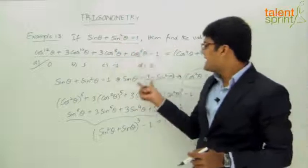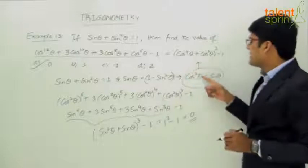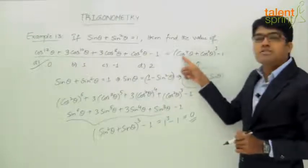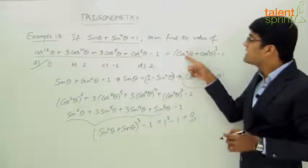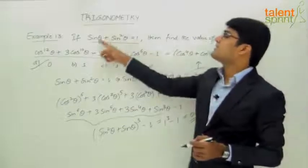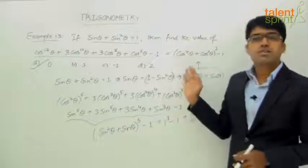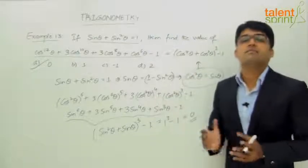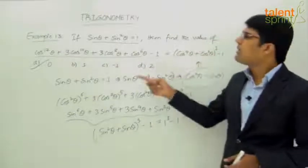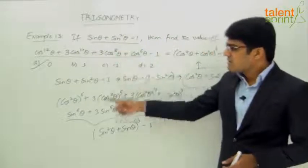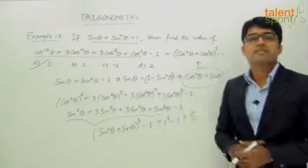Again, from the given equation we know that cos²θ = sin θ. Substituting this: cos²θ becomes sin θ and cos⁴θ becomes sin²θ. So we get (sin²θ + sin θ)³ - 1. Since sin²θ + sin θ = 1, we get 1³ - 1 = 0. Either way, the question reduces to the form (a + b)³. You can take it as (cos⁴θ + cos²θ)³ or convert to (sin²θ + sin θ)³. The final answer remains the same: 0.